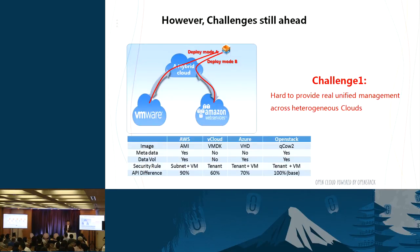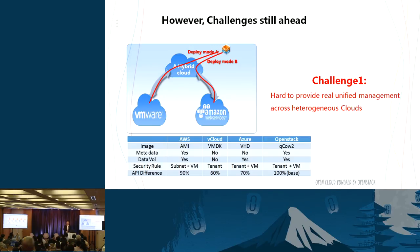How about the technical readiness? Are there any blocking points for achieving these ideal hybrid cloud use cases? We think there are still lots of challenges ahead. The first challenge is the consistency of capabilities and API exposure, as well as the interactive consistency across different cloud types — covering OpenStack, AWS from Amazon, vCloud from VMware, and Azure from Microsoft.